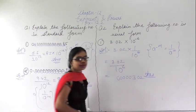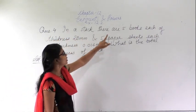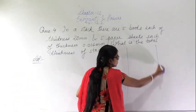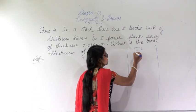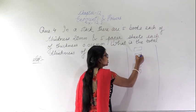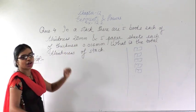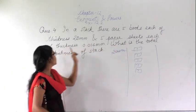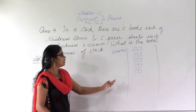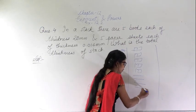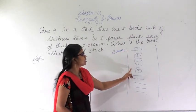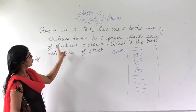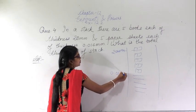Question number 4 says: in a stack there are 5 books, each of thickness 20 mm, and 5 paper sheets, each of thickness 0.016 mm. We have to find out the total thickness of the stack.